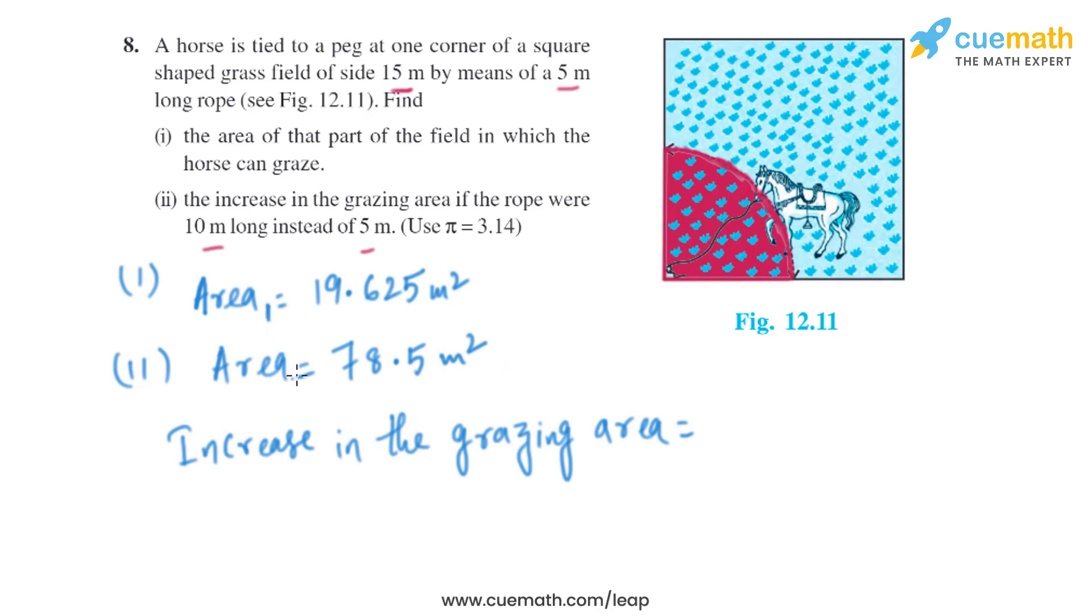This is the area we have when the radius is 5 meters, let's call it area 1. And this is the area when the radius is 10 meters, let's call it area 2. To find the increase in grazing area, it's basically area 2 minus area 1.